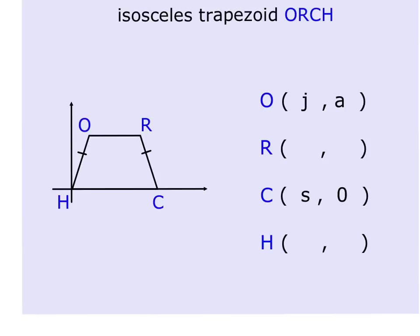In isosceles trapezoid ORCH, we're given a couple of things. O is (j, a). So what you have to understand is that from here to here is j, and then up is a. We are also told that C is at (s, 0).